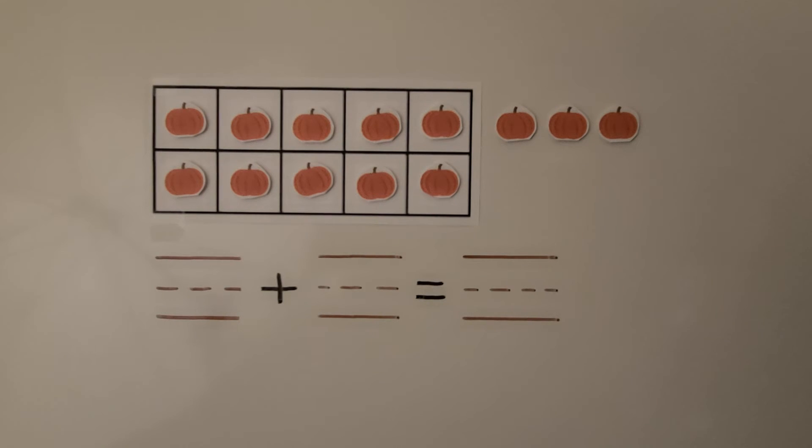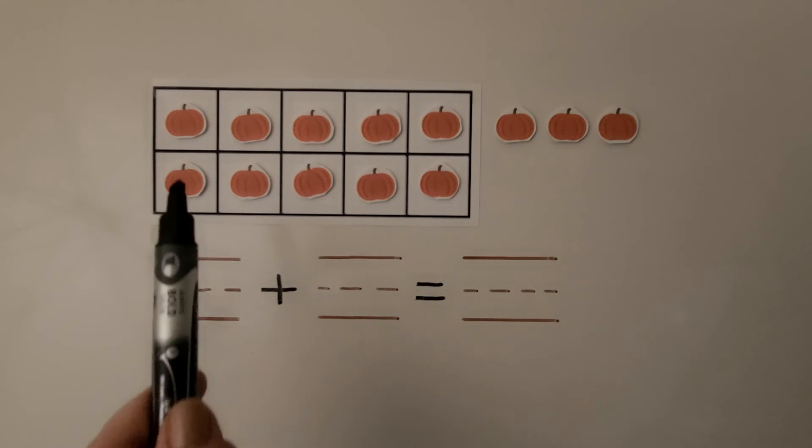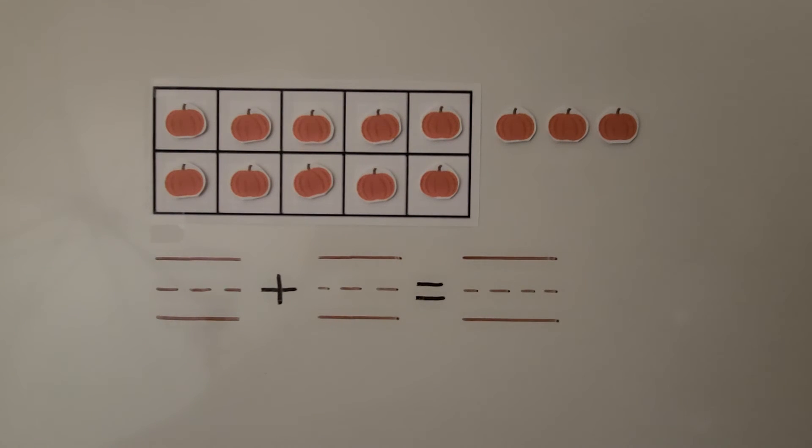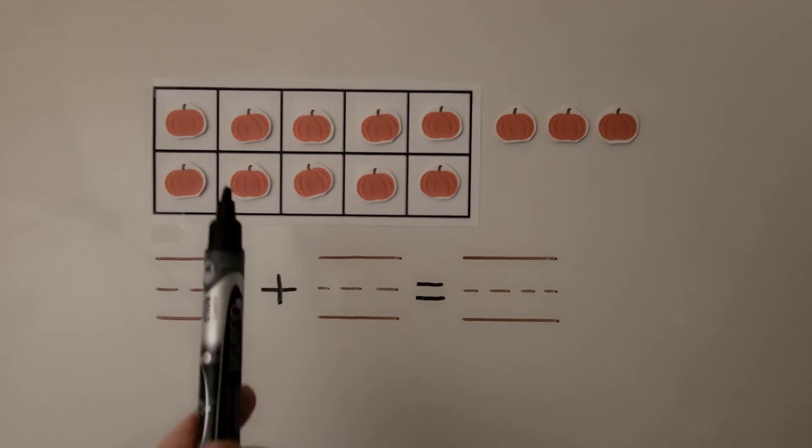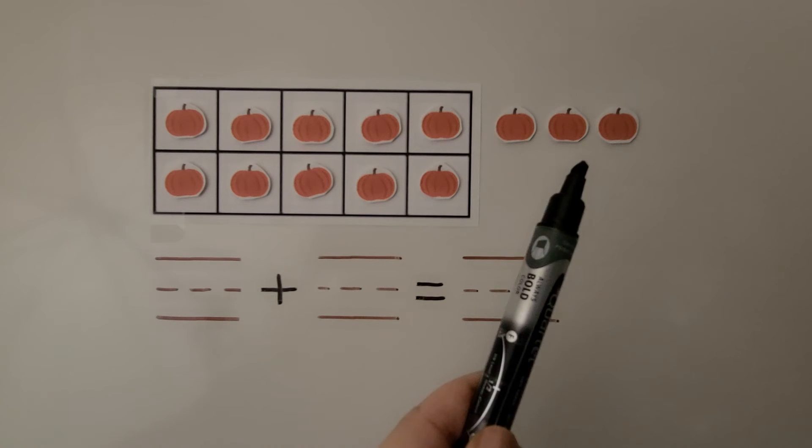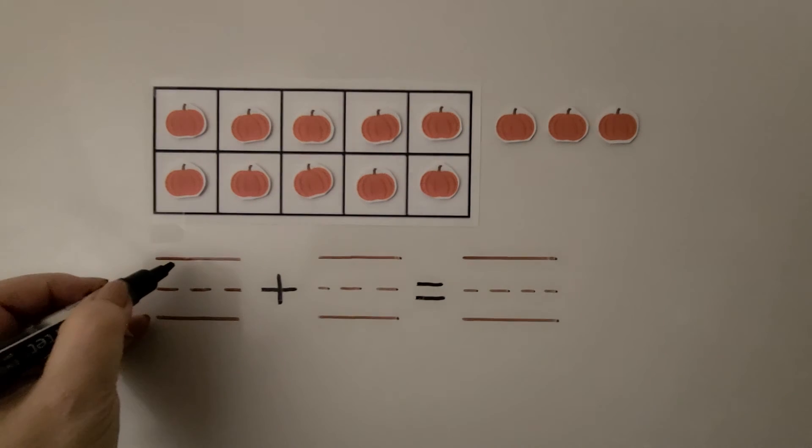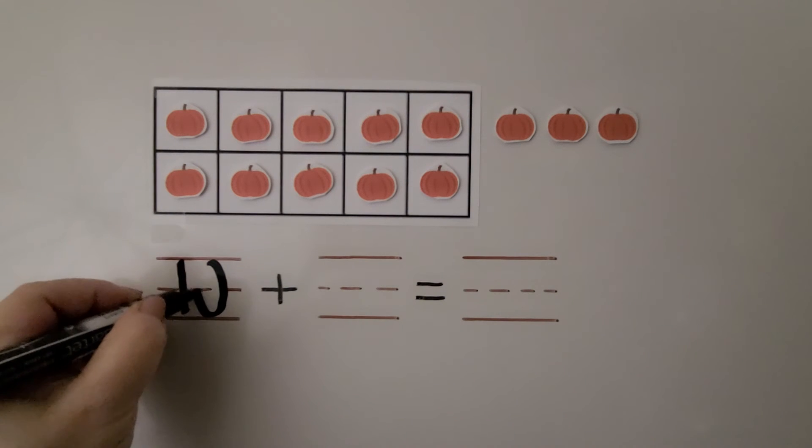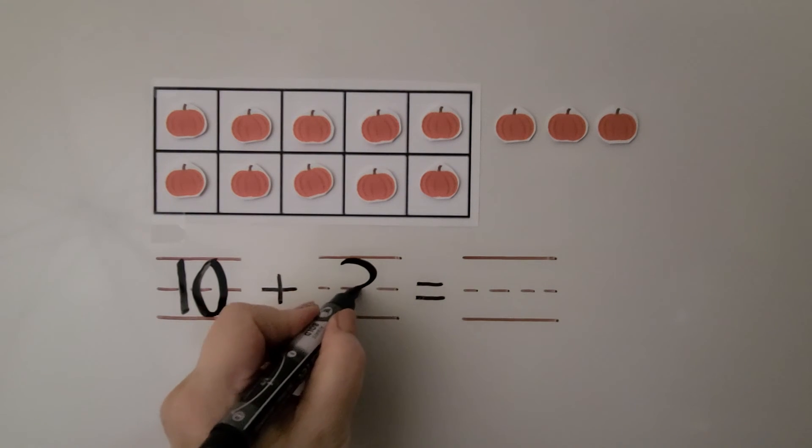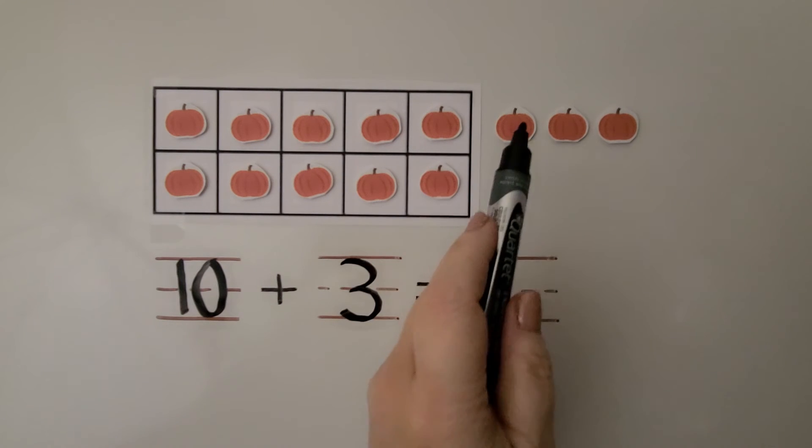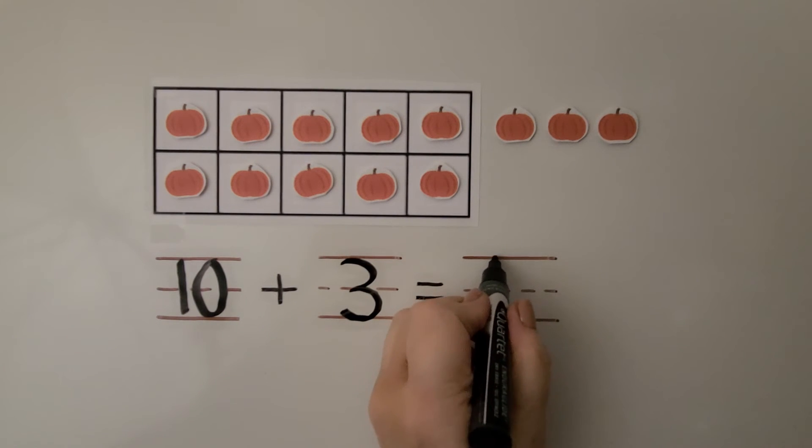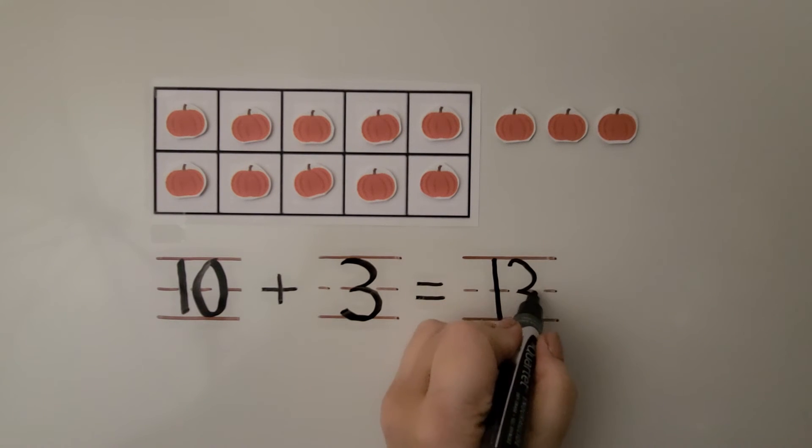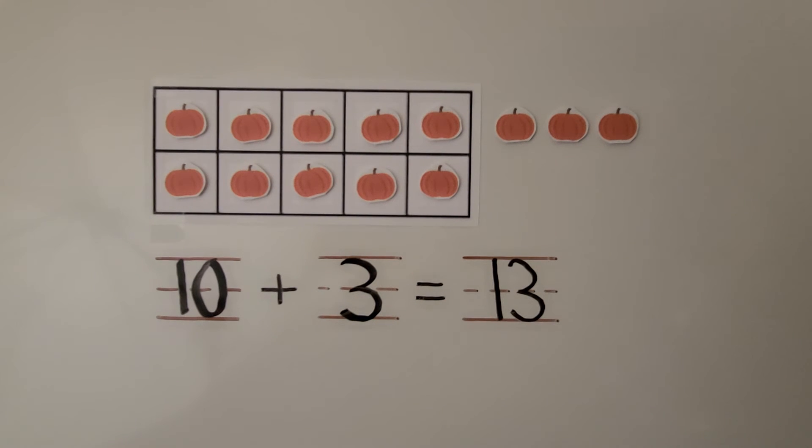Here we have some pumpkins and a 10 frame. Without counting all the pumpkins, we can see there are 10 pumpkins and 3 more. We have a full 10 frame which is 10 and we have 3 more. We have 10, 11, 12, 13 pumpkins. We can write an addition sentence showing 10 and 3 more and it's equal to 13.